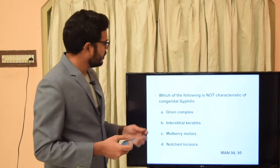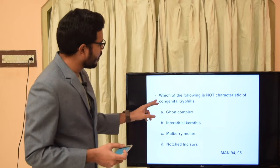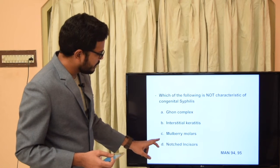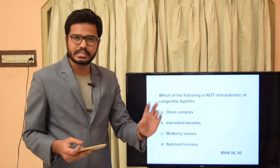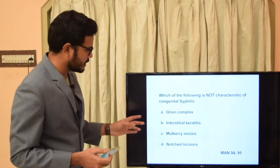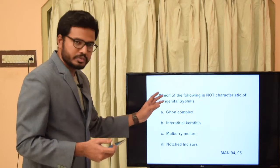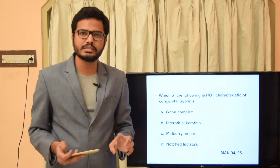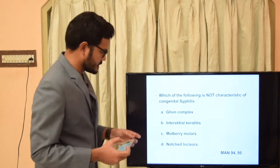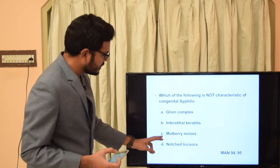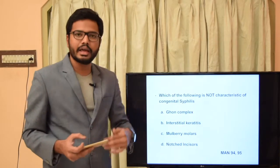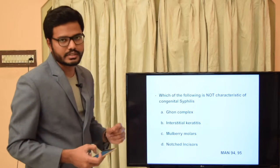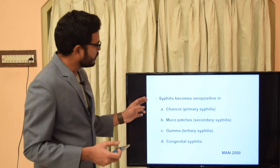Coming to the first question: which of the following is not characteristic of congenital syphilis? Options: Ghon complex, interstitial keratitis, mulberry molars, notched incisors. We just saw the clinical picture of Hutchinson's triad, so we can rule out options accordingly. Ghon complex is a calcified focus of infection seen in the lungs in tuberculosis, whereas interstitial keratitis, mulberry molars, notched incisors, and eighth nerve deafness are components of Hutchinson's triad in congenital syphilis.